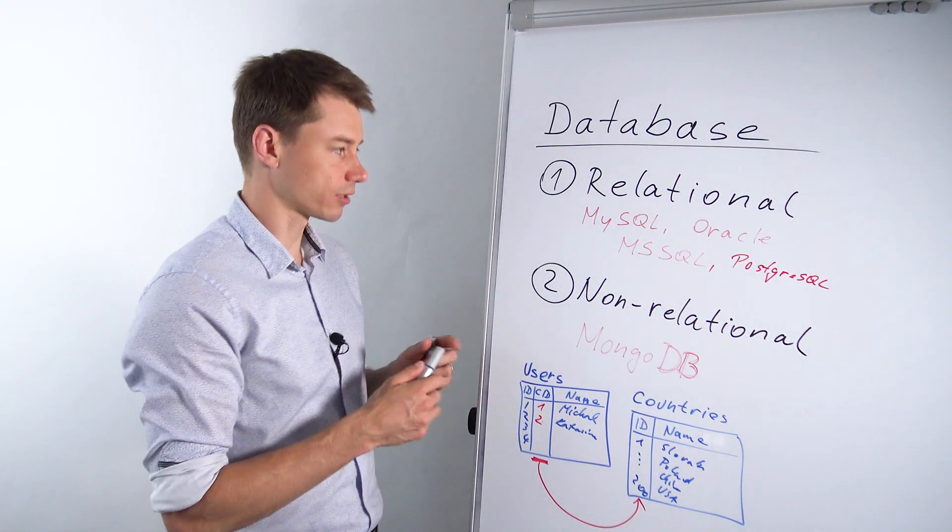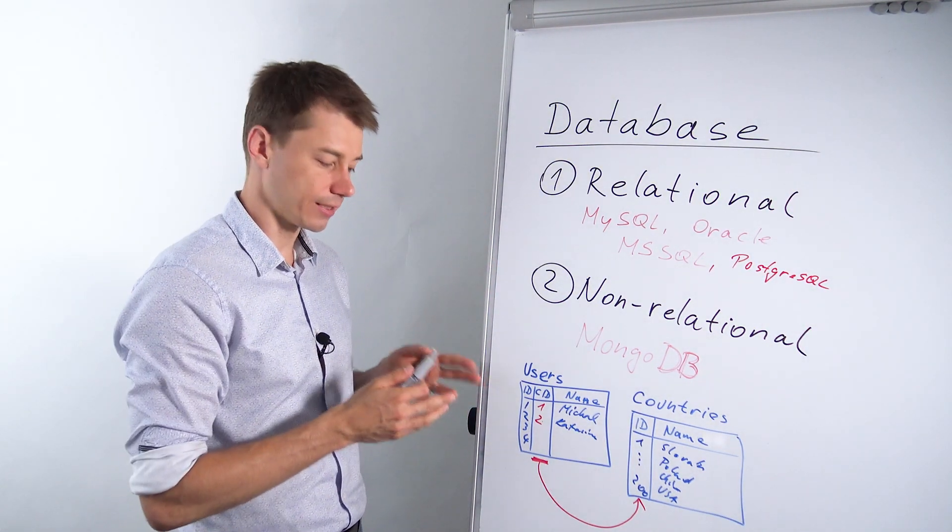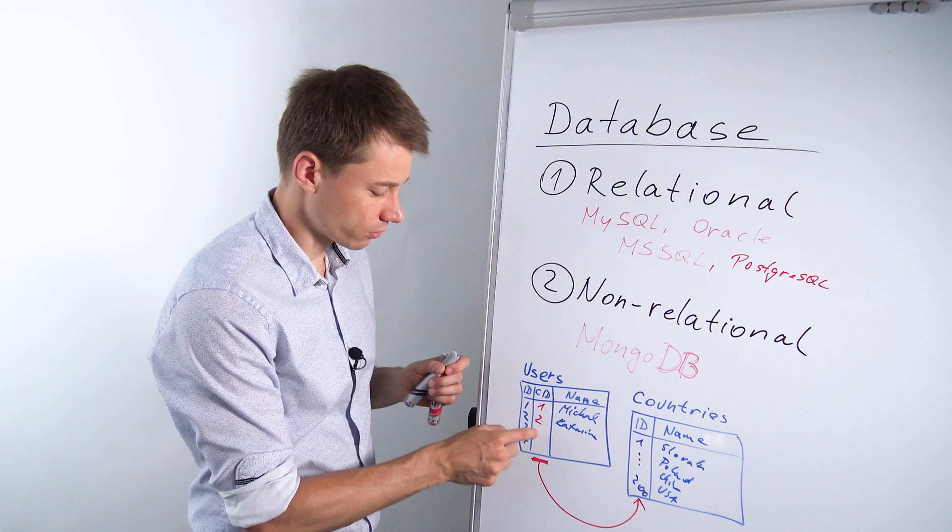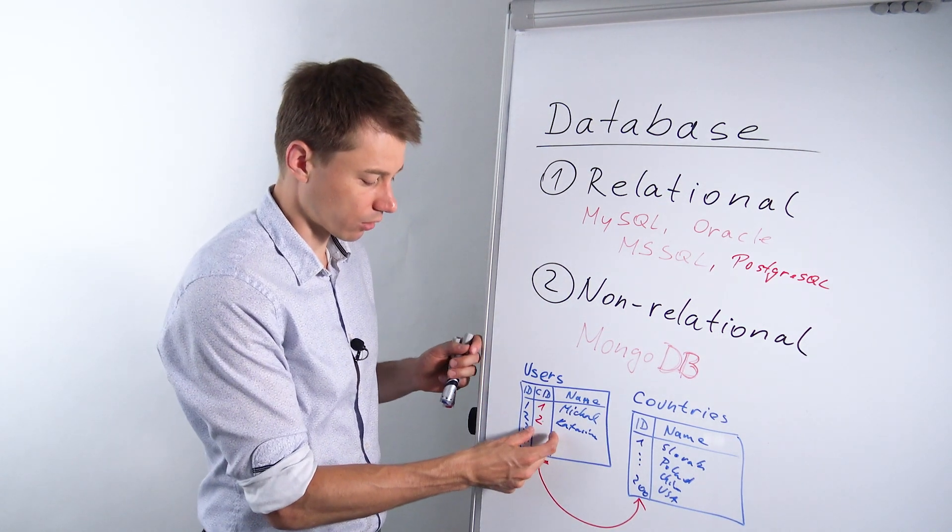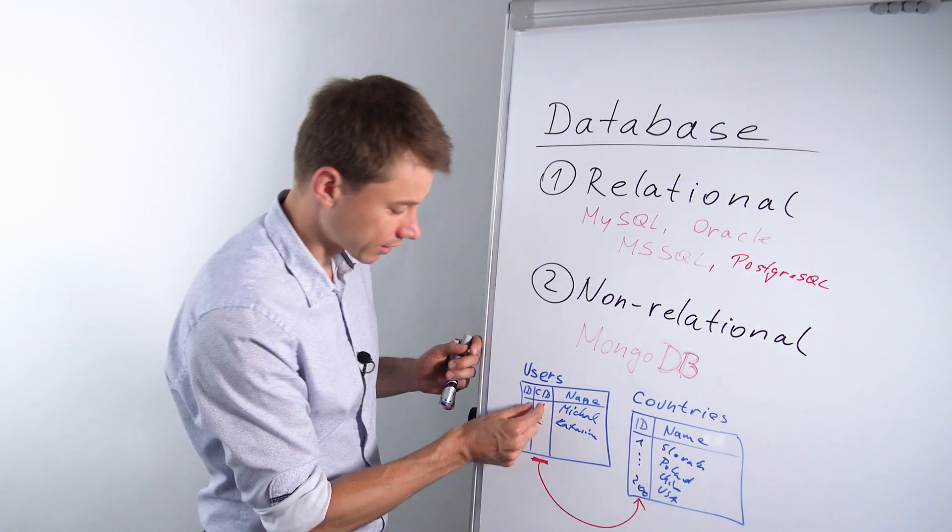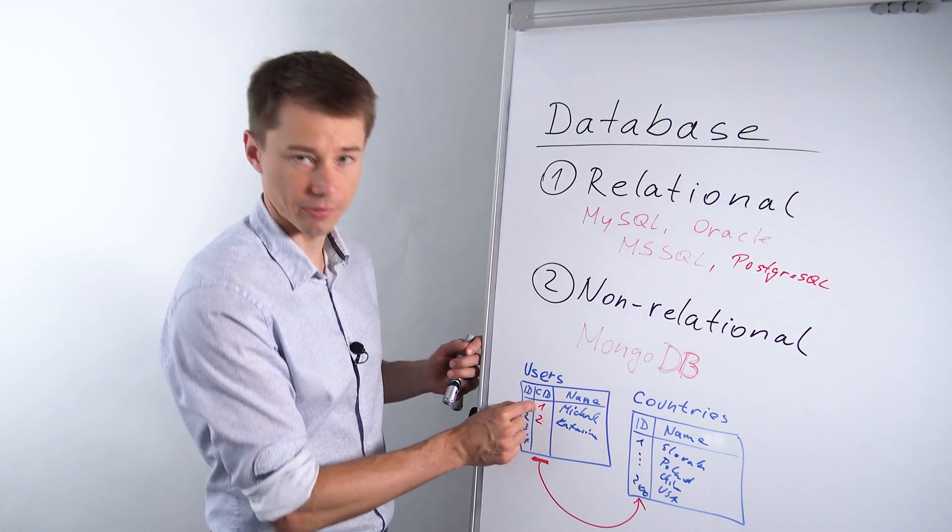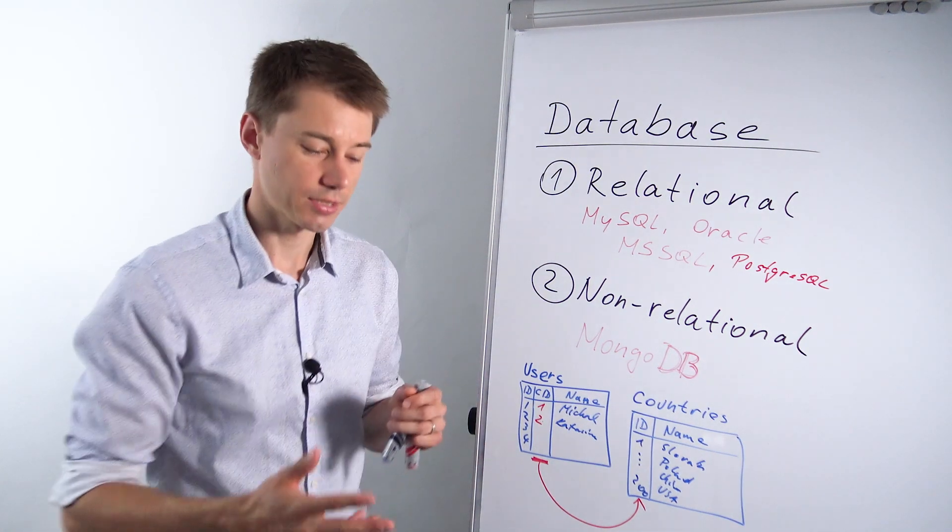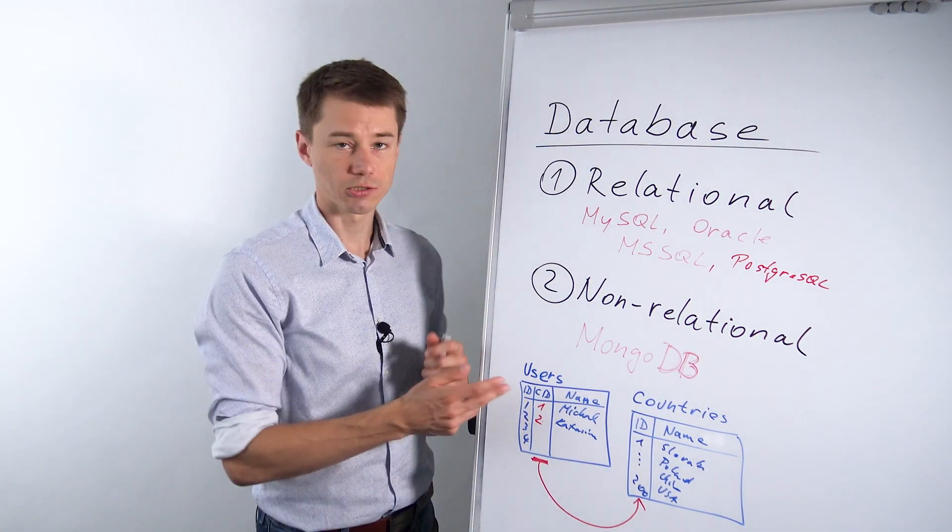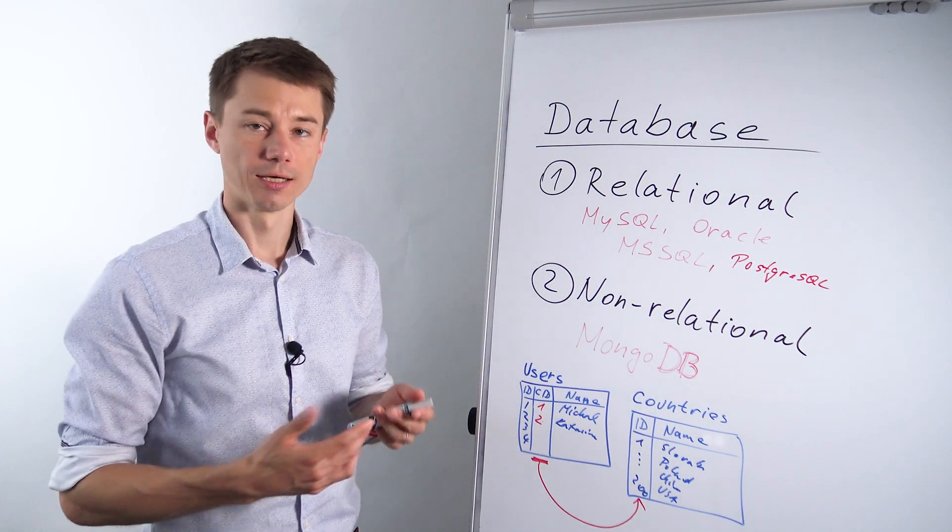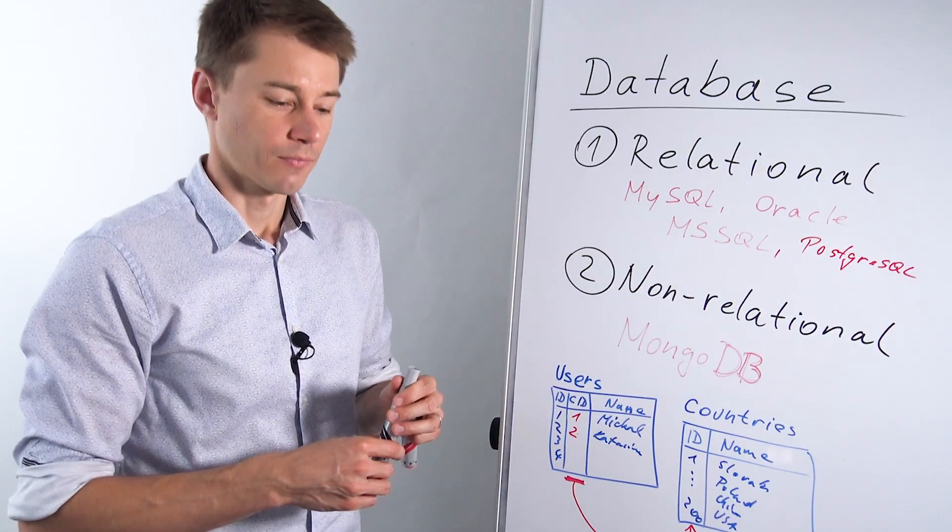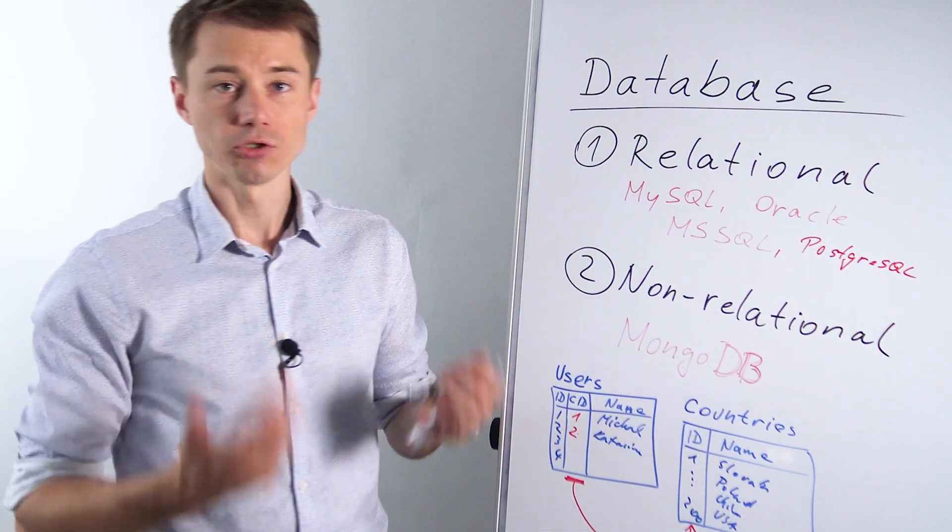So this is a huge advantage of relational databases. You don't need to have a column here. An alternative would be to have a column here with the text. For example Slovakia. It could be here instead of the number Slovakia. But this would bring lots of additional challenges which in general we want to avoid.